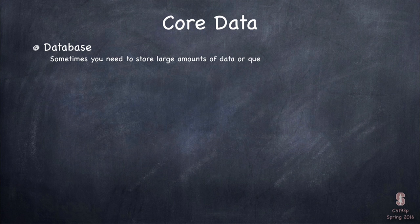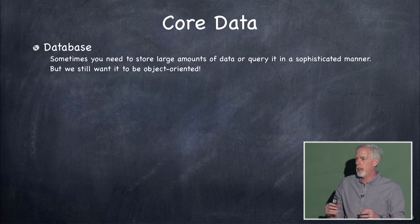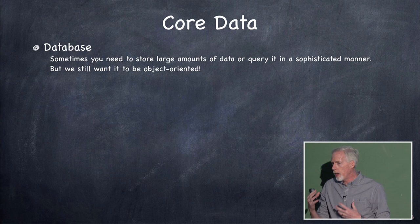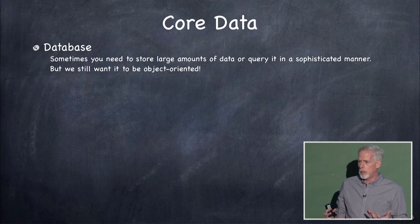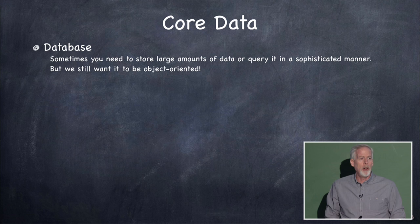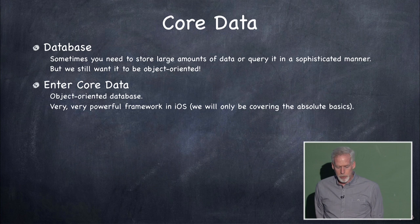Sometimes when you're building an app, you need to store a huge amount of data — like you're doing some kind of Twitter thing, collecting all the tweets, searching through them, doing queries. There are technologies out there like SQL databases, but when we're programming we want everything to be object-oriented. iOS has this awesome object-oriented database system called Core Data.